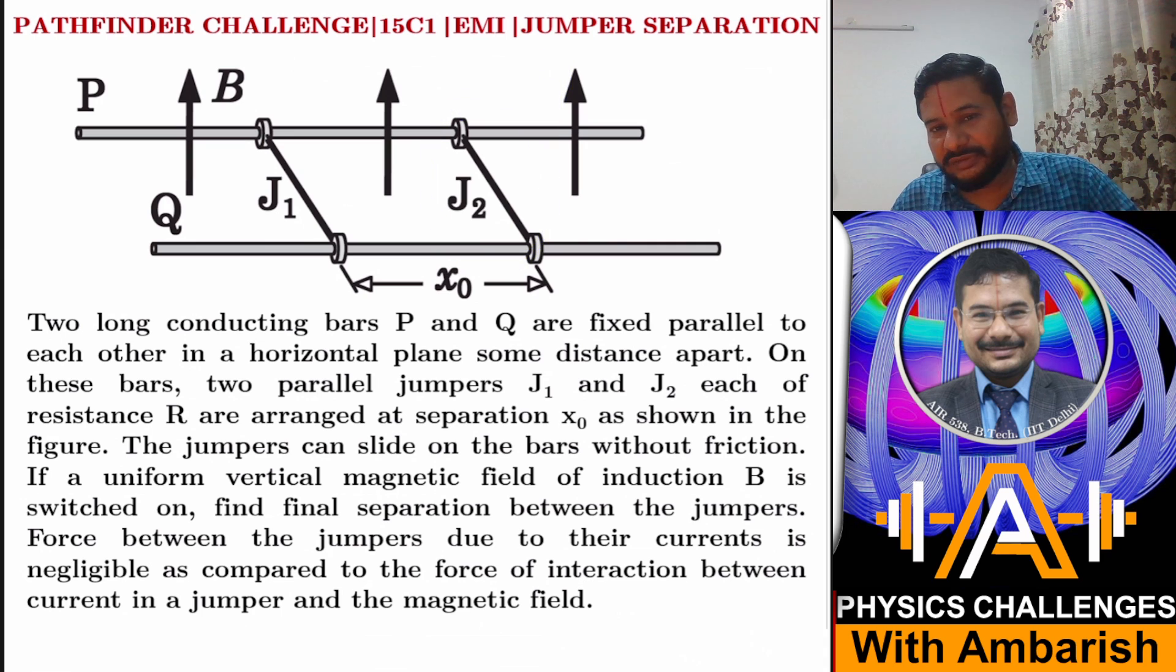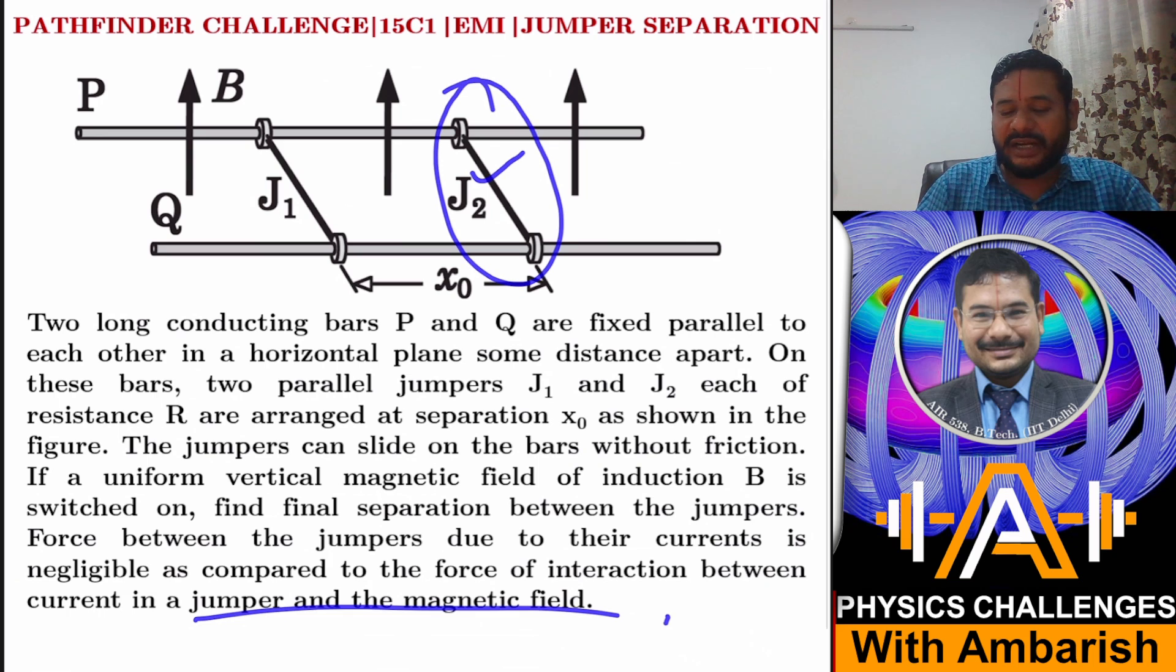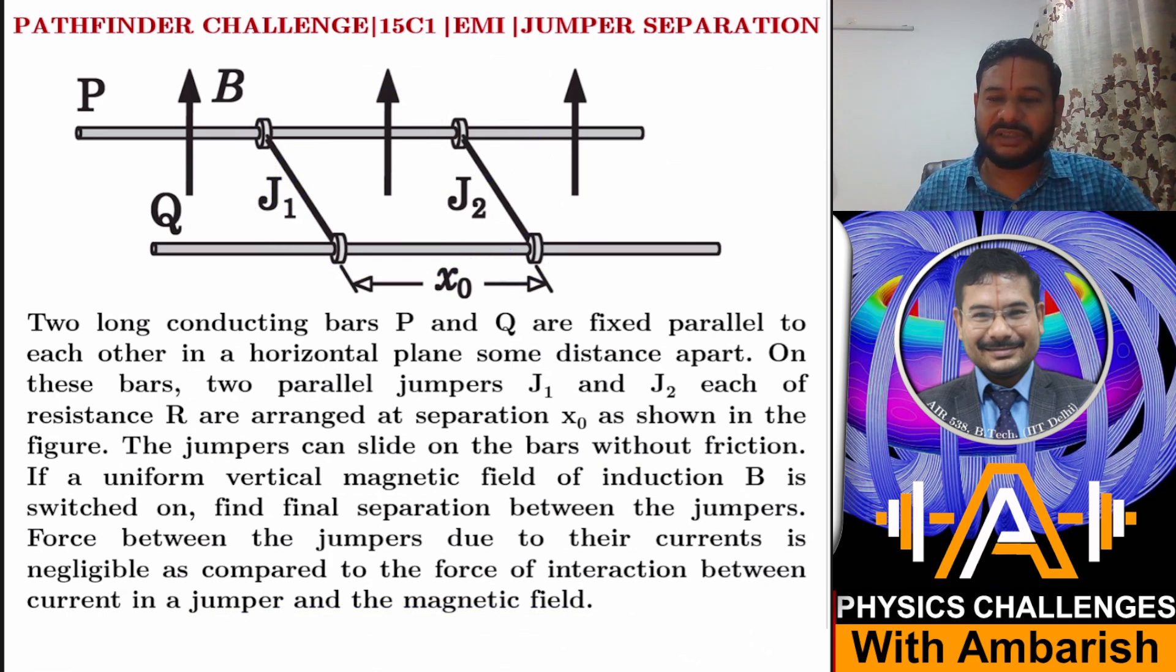So there will be some current in the jumper because of that there will be some force I·L cross B. What this statement means is that this current and this current, their mutual interaction can be ignored for solving the problem.